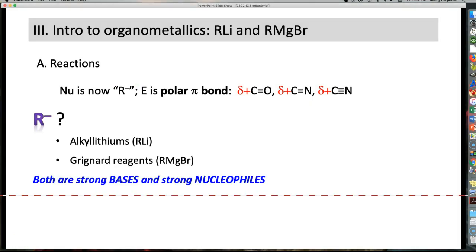What is this carbanion? Well, that's the notorious alkyllithiums, R-Li, and Grignard reagents, a magnesium salt. Both of these translate into C-, therefore they're really strong bases and they're really strong nucleophiles.